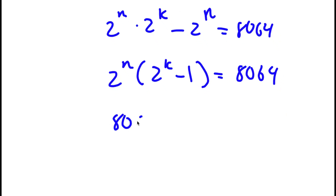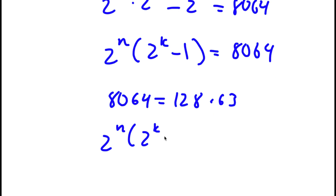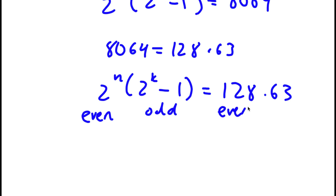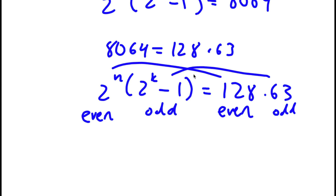Now 8,064 is simply equal to 128 times 63. So I have 2^n times (2^k minus 1) equals 128 times 63. Notice that 2^n is an even number, and 2^k minus 1 is an odd number, because 2^k is even and an even number minus 1 is odd. And 128 is even, and 63 is odd. So I can set the even parts equal to each other and the odd parts equal to each other.